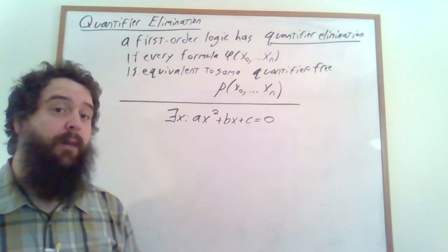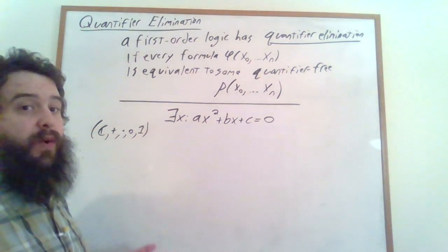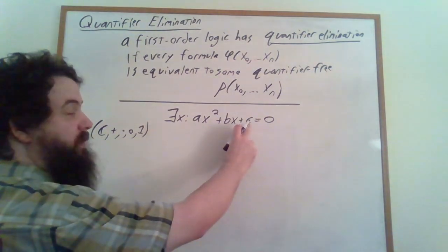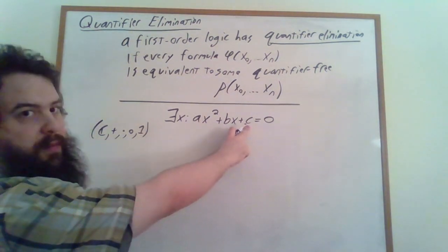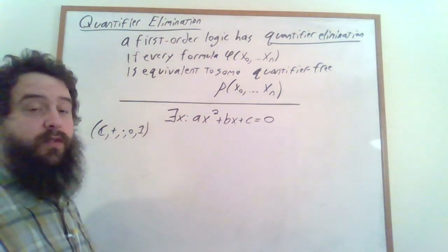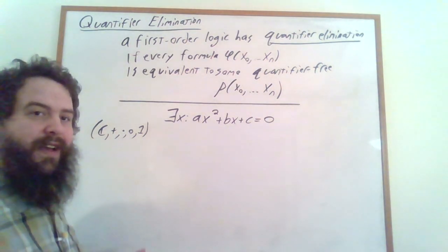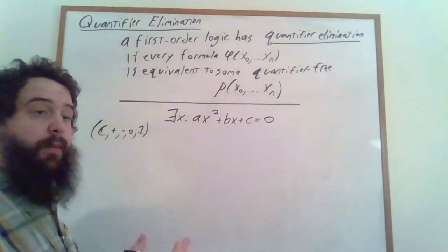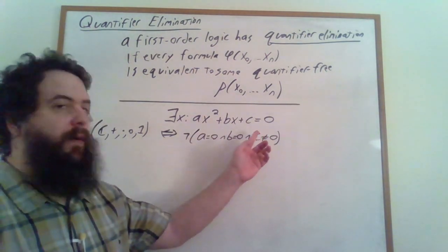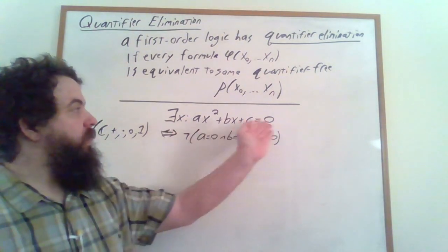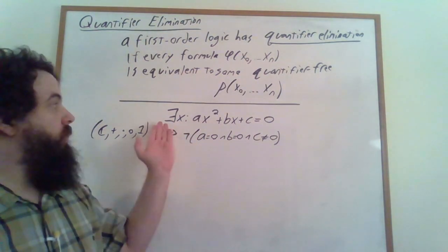When does a polynomial like this have a solution in the complex numbers? The only situation where it doesn't have a solution is when this polynomial is actually some non-zero constant — when a is 0 and b is 0 and c is non-zero — and then we have something like 2 equals 0, and there's no solution. Otherwise, there's going to be a solution. So over the complex numbers, this formula is equivalent to: it's not the case that a equals 0, and b equals 0, and c is not equal to 0. We were able to take this formula with three free variables and one quantified variable, and get rid of that quantified variable.